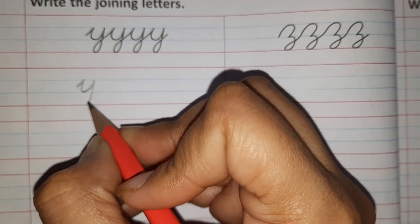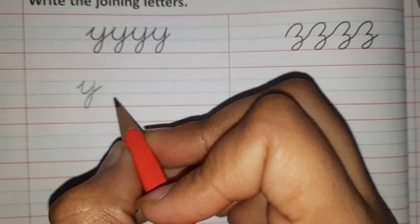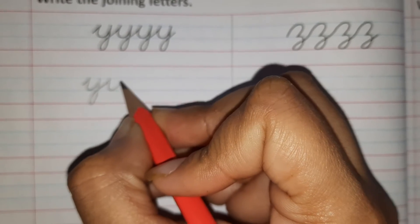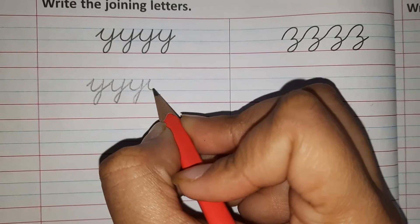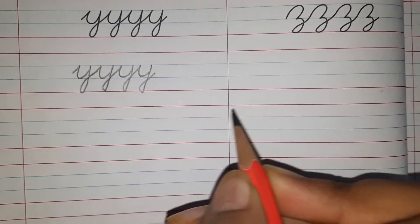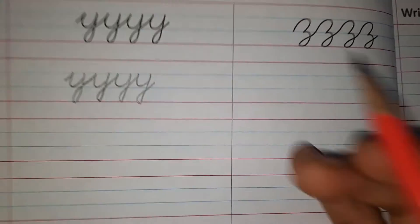So we will form the first small cursive y like this and then join them further. We have practiced this earlier also with rest of the letters and now we will be reaching on the last set of letters which is y and z.